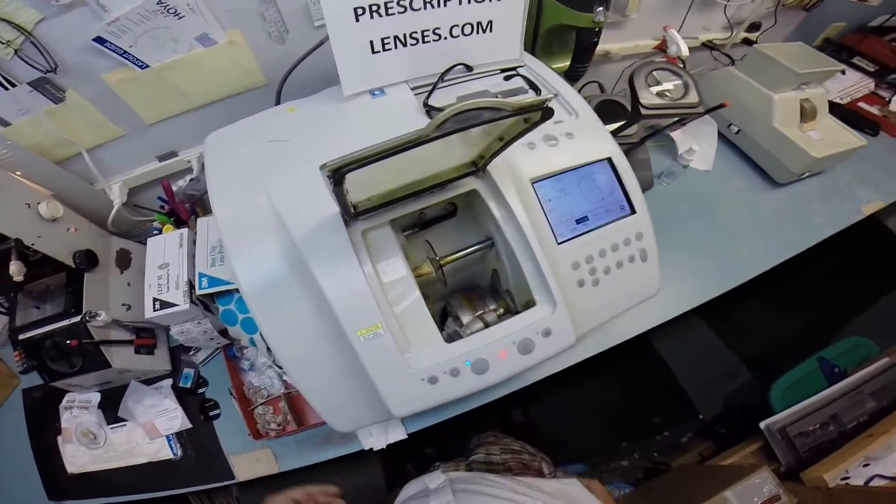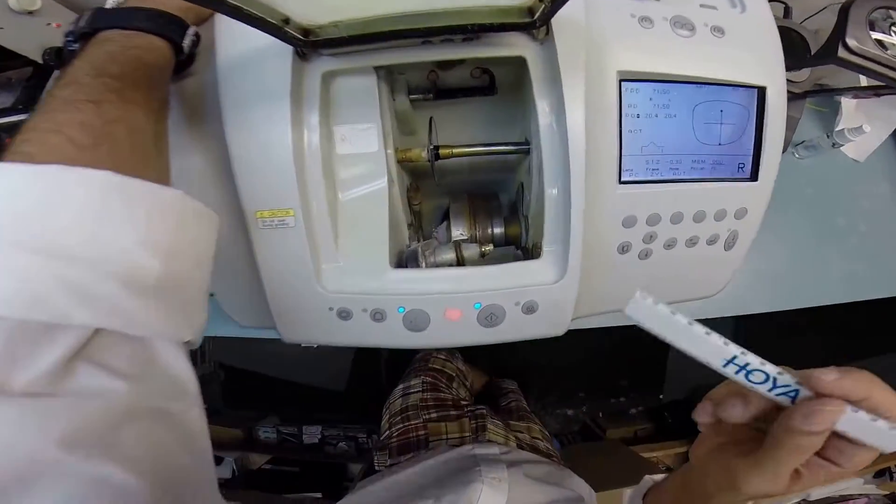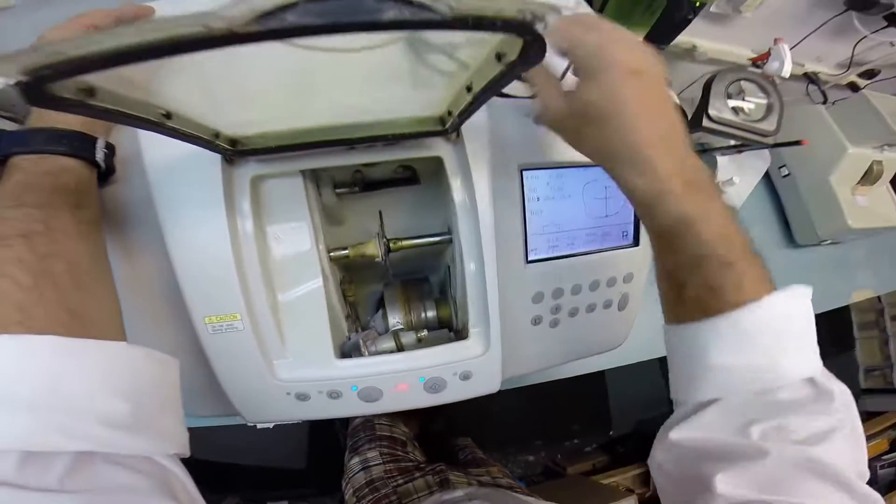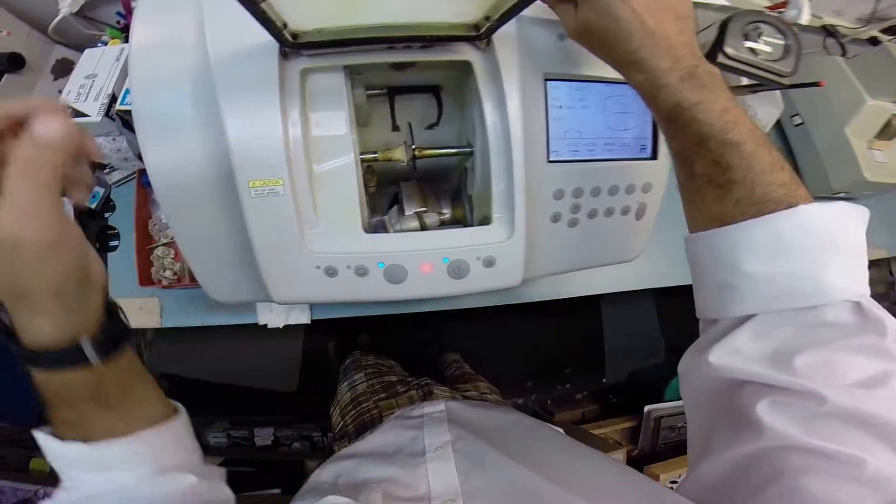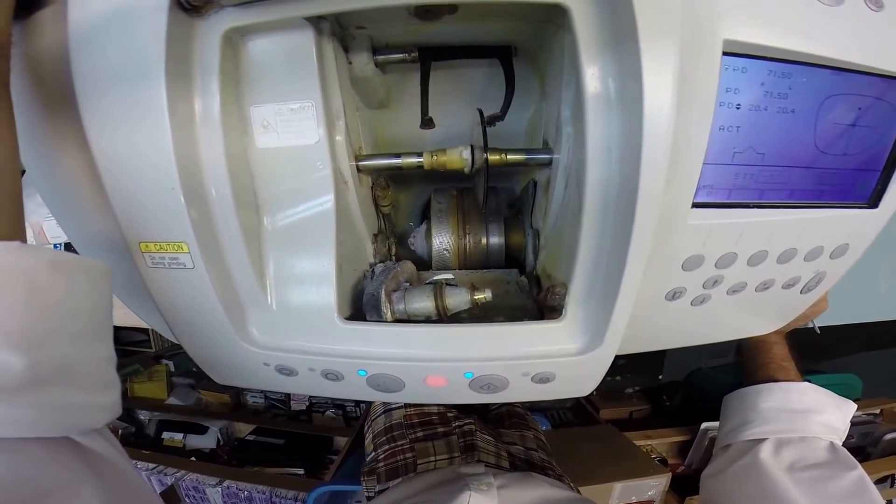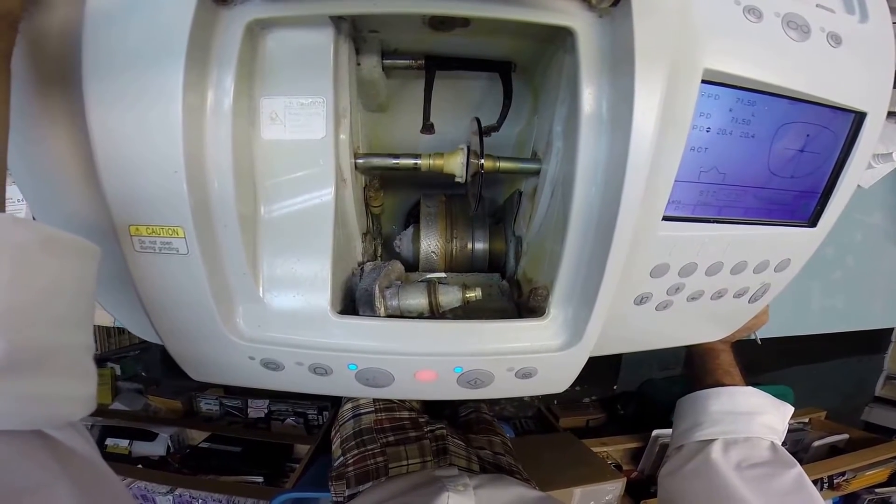Let's hit start. The first thing that's going to happen is these calipers are going to come down and trace the shape of the right side of the frame, starting with the rear surface - the concave surface which is closest to your eyelashes - and then it's going to move over and trace the front surface of the lens, also known as the convex side.